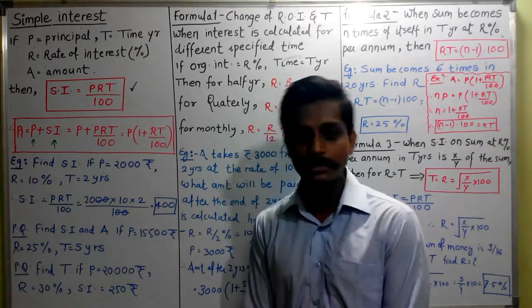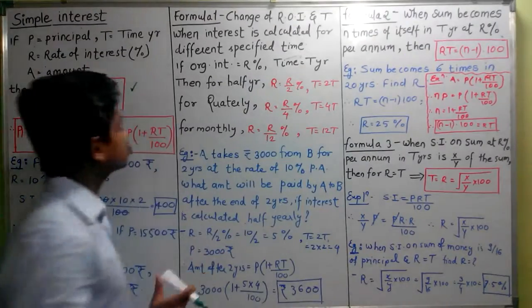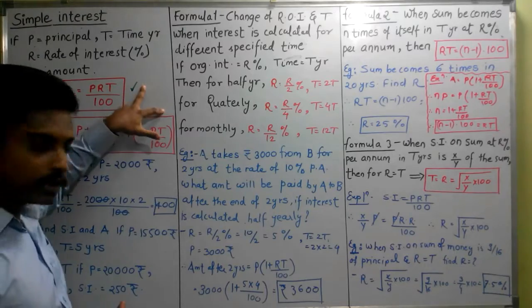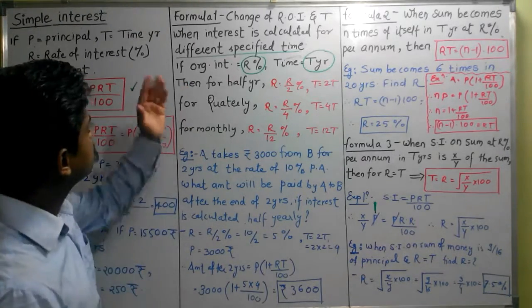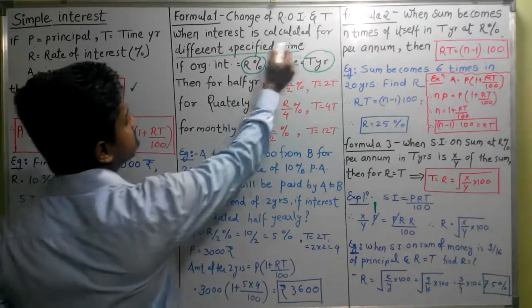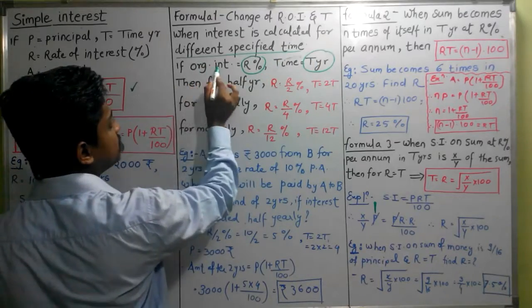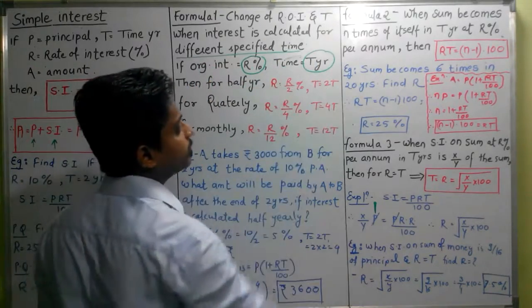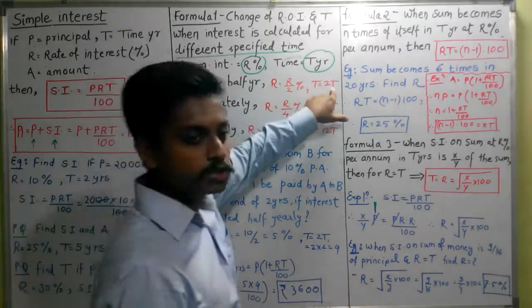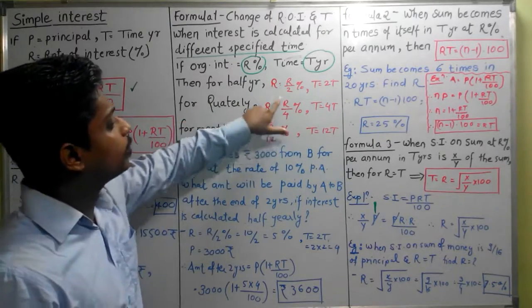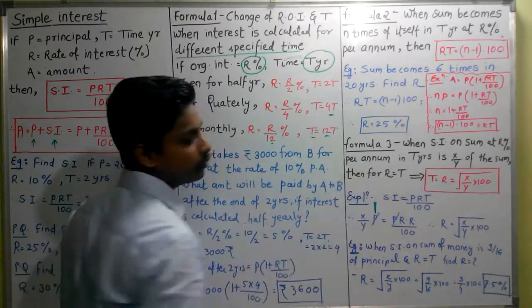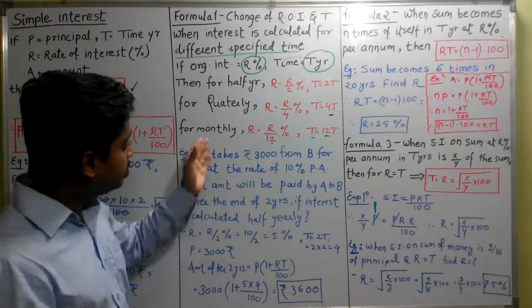I am going to give you two most important formulas. Next is Formula 1: Change of rate of interest and time duration when interest is calculated for different specified time. If original interest rate is R% and time given T years, then for half yearly, R is R upon 2 and T is 12T.